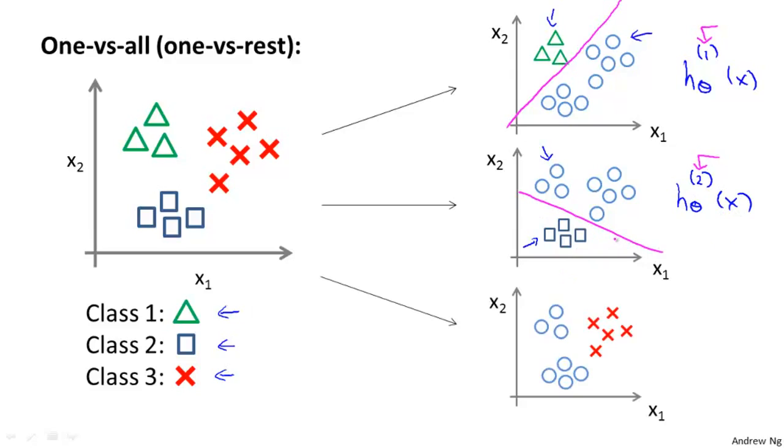And finally, we do the same thing for the third class and fit a third classifier, h superscript 3 of x, and maybe this will give us a decision boundary that separates the positive and negative examples like that.